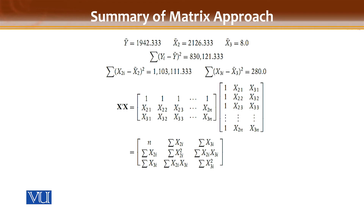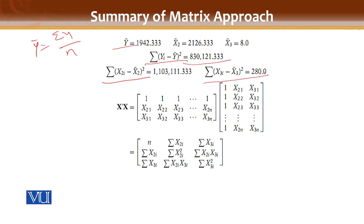From the given information, you can easily find y-bar, where y-bar = sum of y divided by n (number of observations). Similarly, x2-bar = sum of x2 divided by n, and x3-bar = sum of x3 divided by n. Then you compute deviations: (y minus y-bar), (x2 minus x2-bar), and (x3 minus x3-bar), and their squares.